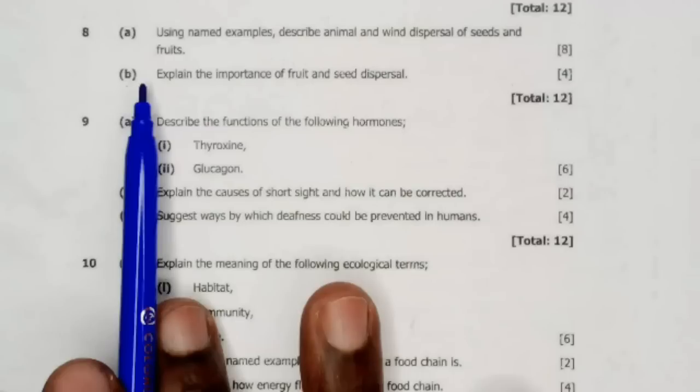Question 8A: Using named examples, describe animal and wind dispersal of seeds and fruits. Part B: Explain the importance of fruit and seed dispersal.